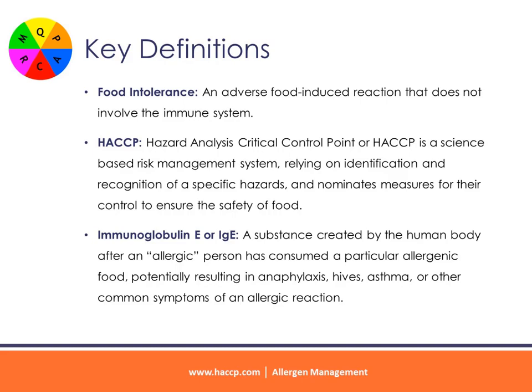HACCP — Hazard Analysis Critical Control Point — is a science-based risk management system relying on identification and recognition of specific hazards. It nominates measures for their control to ensure the safety of food. Immunoglobulin E or IgE — a substance created by the human body after an allergic person has consumed the particular allergenic food, potentially resulting in anaphylaxis, hives, asthma, or other common symptoms of an allergic reaction.